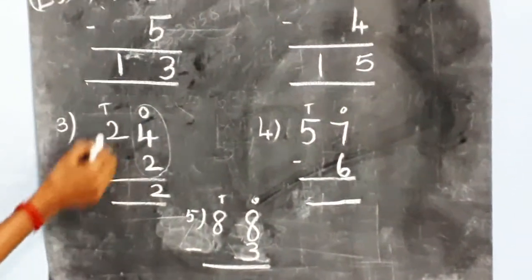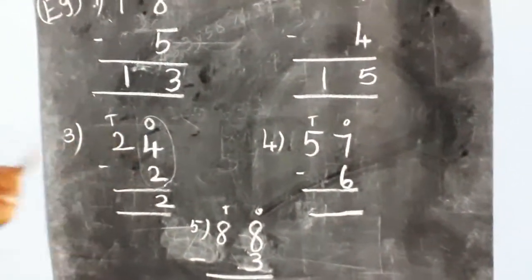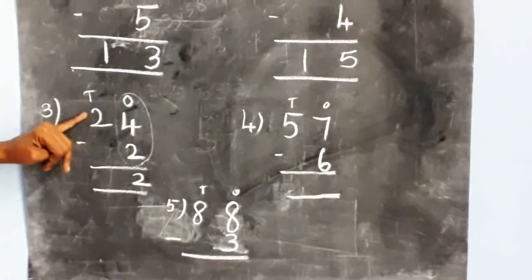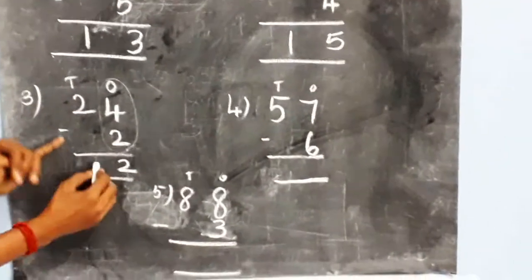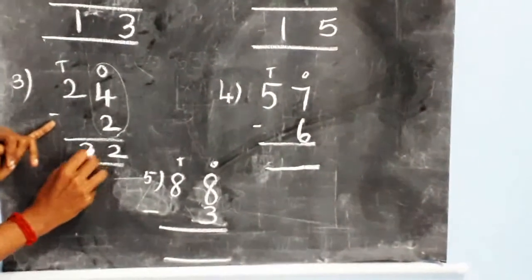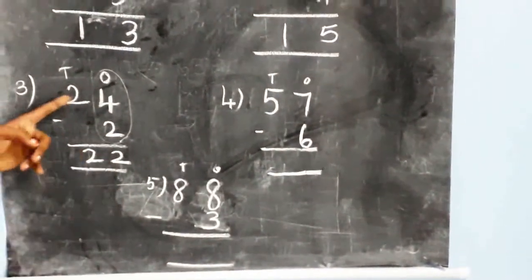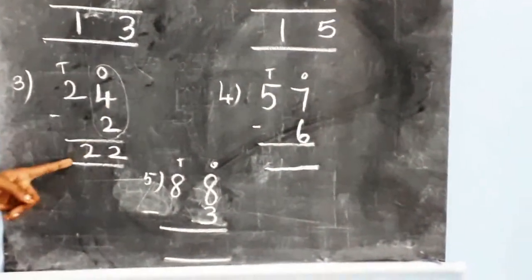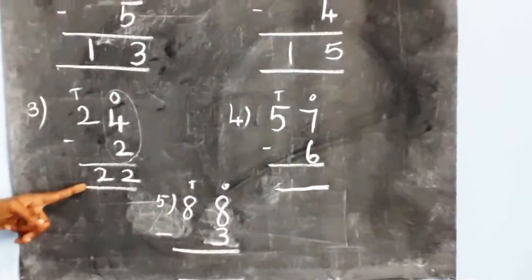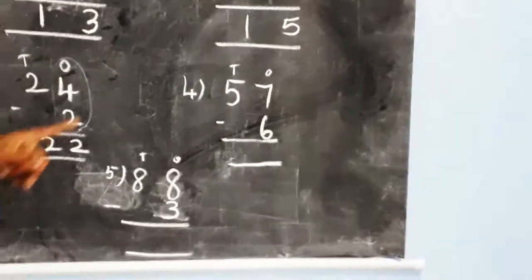Then subtract the tens place. Here two will be there, so we bring up the two. So twenty-four minus two is equal to twenty-two.